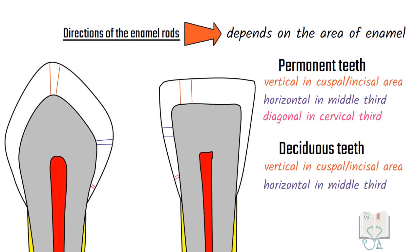In deciduous teeth, the rod's directions are same as permanent teeth except in the cervical third where the rods are not diagonal but horizontal.